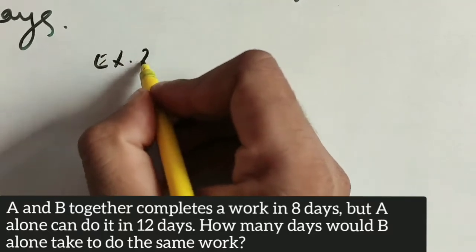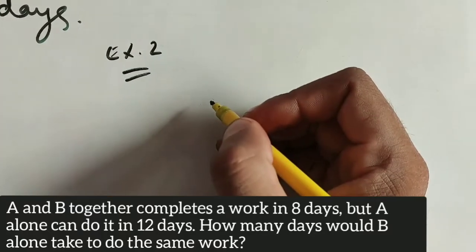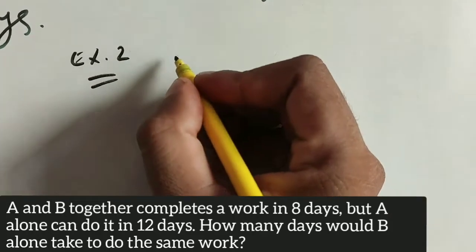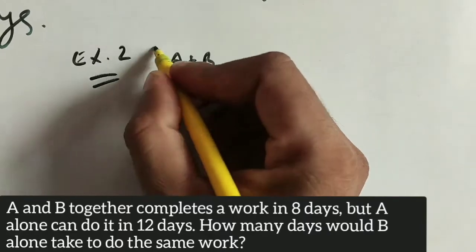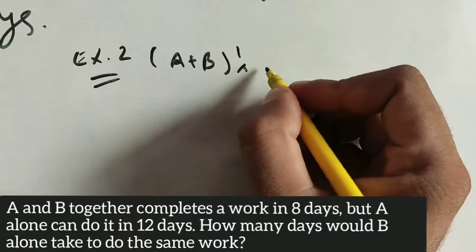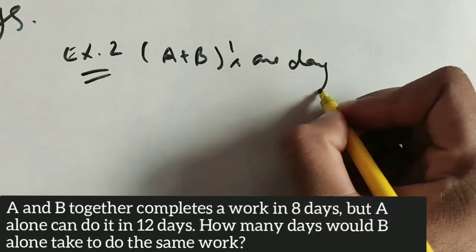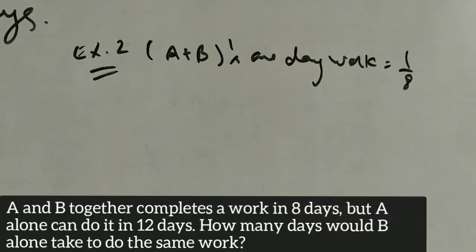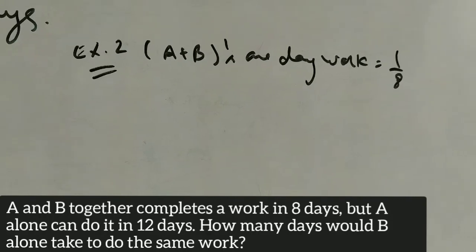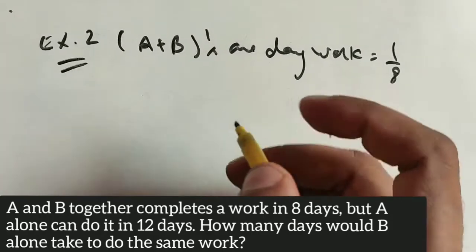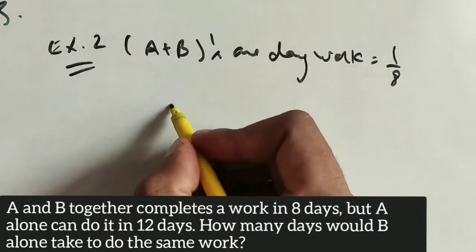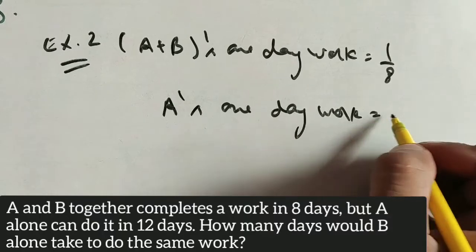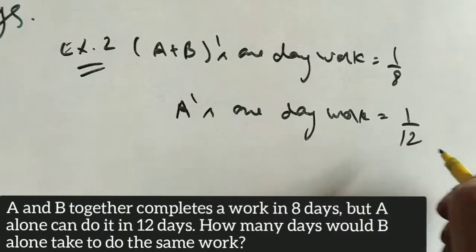Example 2: A and B together can do the work in 8 days, so their combined 1-day work is 1/8. A can alone do it in 12 days, so A's 1-day work is 1/12.